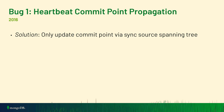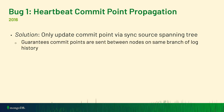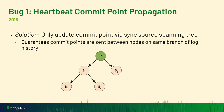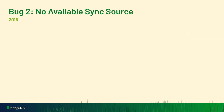Our solution was to add a constraint on how commit points can flow between nodes — to guarantee that commit points are only sent between nodes on the same branch of log history. Basically, you can only receive a commit point from someone if your log is a prefix of theirs. Conceptually, we call this the sync source spanning tree, where if node S syncs from node T, you have a link in a graph, with log entries flowing from a primary down through to secondaries.